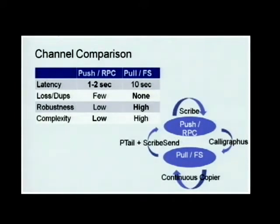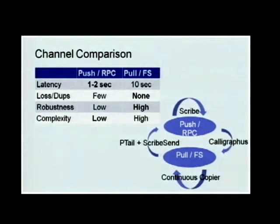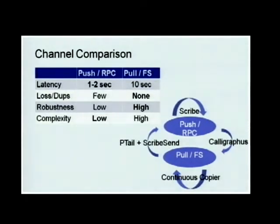If there are network errors in the pull approach, we can easily recover. But with push, if we send some data and the acknowledgment gets lost, we'll resend the data, which is not good. The complexity of the file system is a little higher — even for HDFS it's not as stable as we'd want. We are continuing to improve that. All four tools together create a matrix around these two channels.